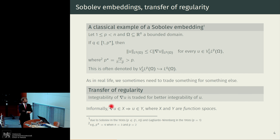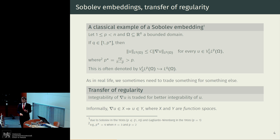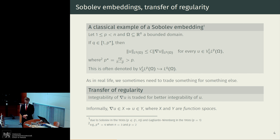Very broadly speaking, Sobolev embeddings mean that if we know that derivatives of our function belong to some function space, then the function itself belongs to another, preferably better, function space. Function spaces are classes or families of functions that share some common properties, for example, weak differentiability and some quality of integrability of derivatives. That's the case with Sobolev spaces.